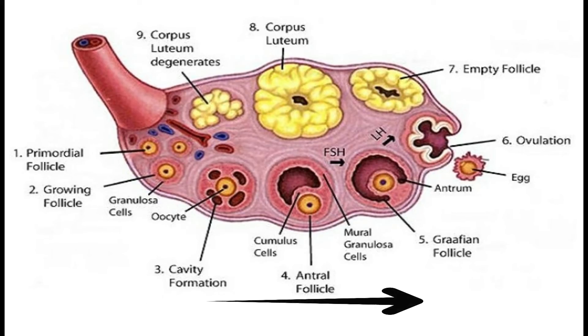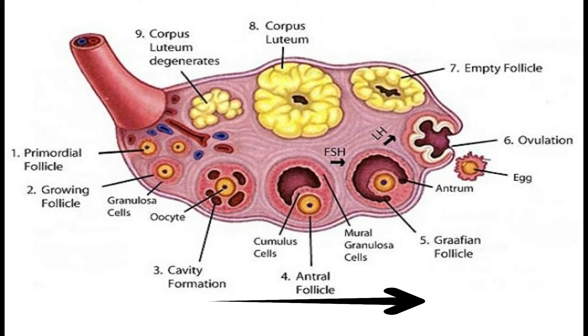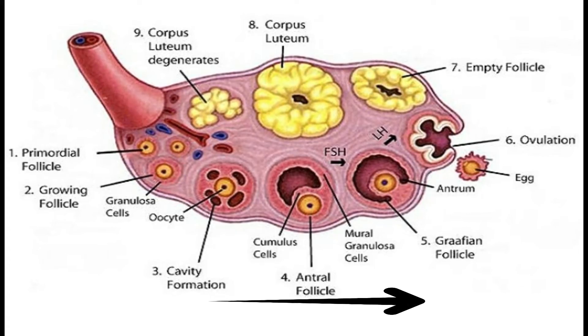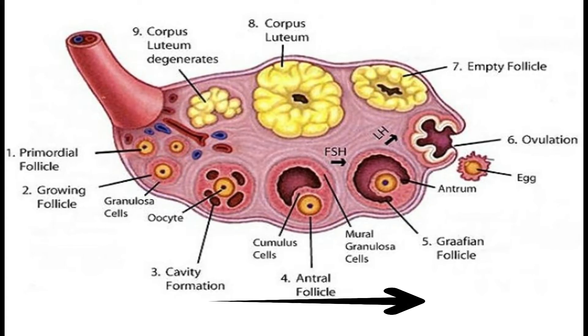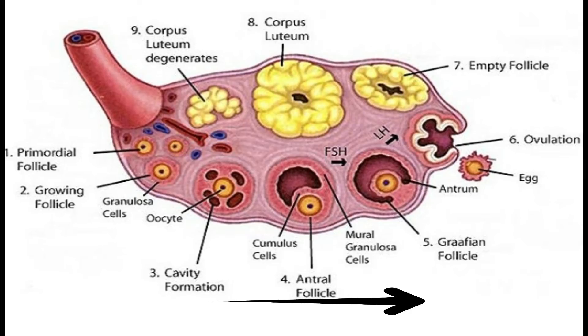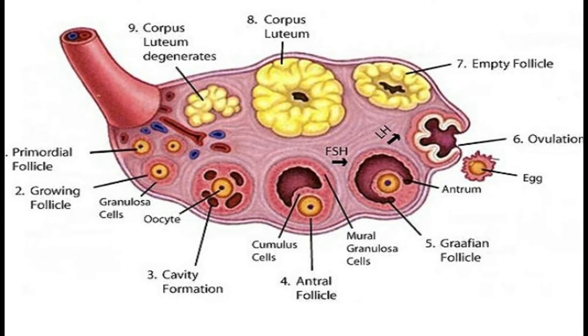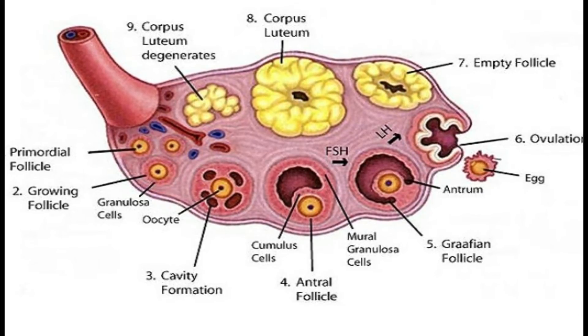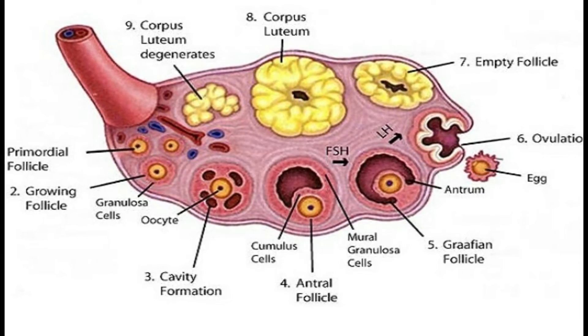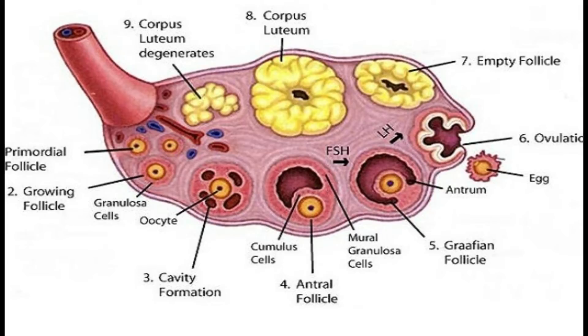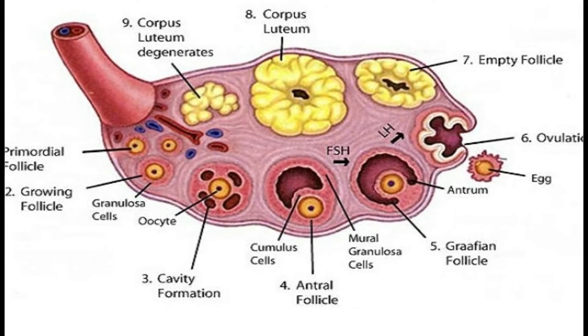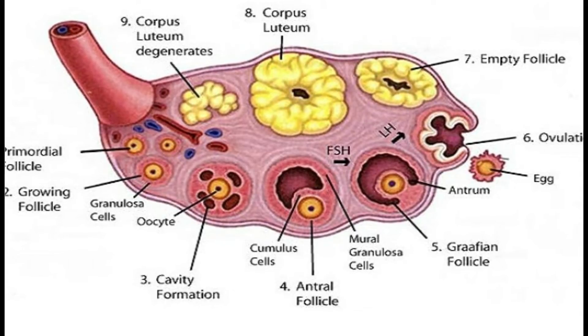At about the seventh day of a 28-day cycle, only one of these follicles, known as the dominant follicle, continues to grow. The other follicles, which at this time had suffered restriction in growth, degenerate.